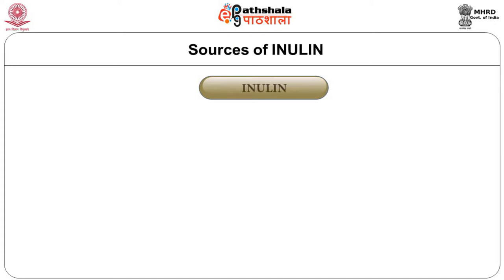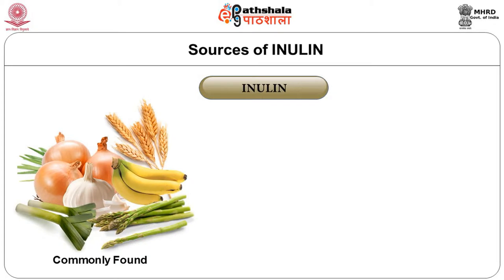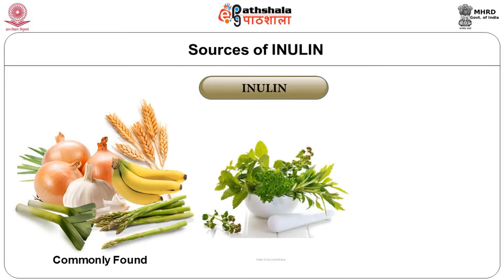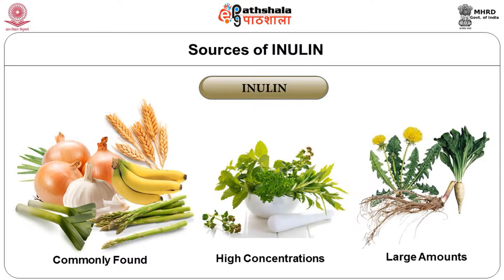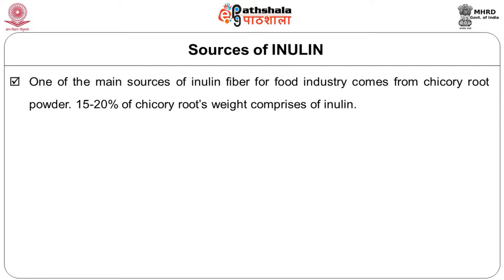Inulin is most commonly found in asparagus, leek, onions, banana, wheat, garlic, high concentrations in herbs, and in large amounts in dandelion root, chicory root and elecampane root. These are the important sources where inulin can be found in higher concentrations. Jerusalem artichoke contains 14 to 19 percent inulin fiber. Traditional artichokes may contribute about 3 to 10 percent of their weight as inulin. One of the main sources of inulin fiber for the food industry comes from chicory root powder, which contains 15 to 20 percent inulin.